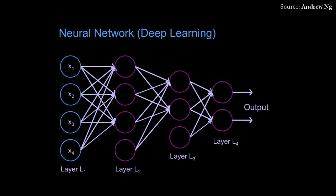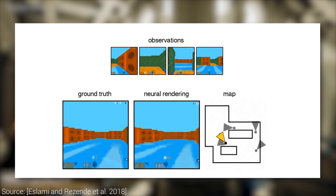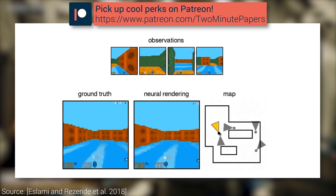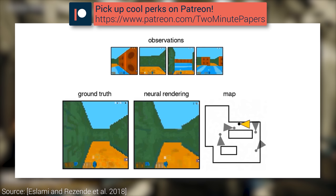A neural network is given by a prescribed number of layers, neurons within these layers, and weights — the list of conditions under which these neurons will fire. By choosing the weights appropriately, we can make the neural network perform a large variety of tasks, for instance, to tell us what an input image depicts, or predict new camera viewpoints when looking at a virtual scene.